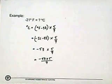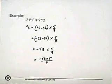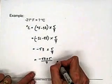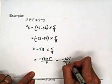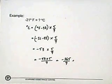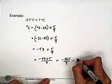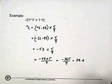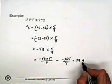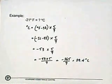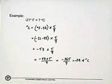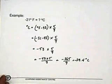Minus 53 times 5 is minus 265. Minus 265 divided by 9 is 29.444 — a repeating 4 — so we round it to 29.4. And it should be negative, because a negative divided by a positive is a negative. So the answer is minus 29.4 degrees Celsius.